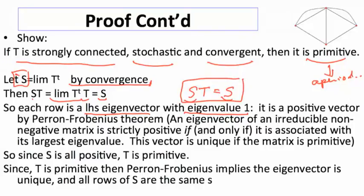then the Perron-Frobenius theorem, an eigenvector of an irreducible non-negative matrix, is strictly positive, if and only if it's associated with the largest eigenvalue, and this vector is unique in the case where the matrix is primitive. So since S is all positive, we end up with T being primitive, and then when T is primitive,